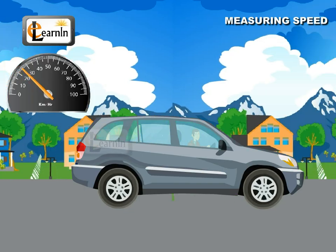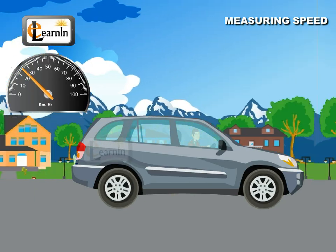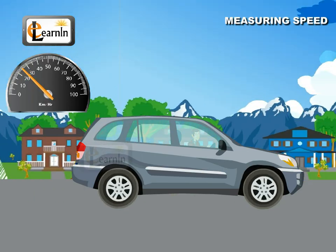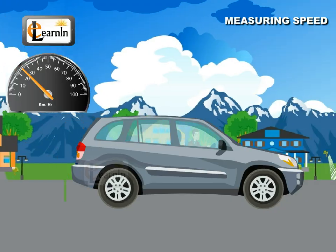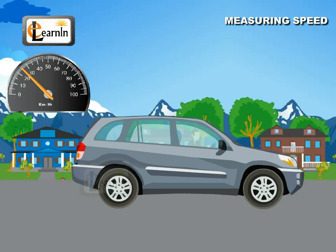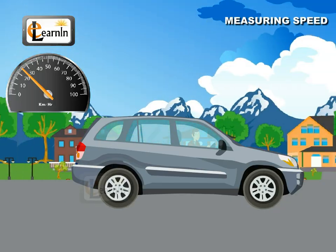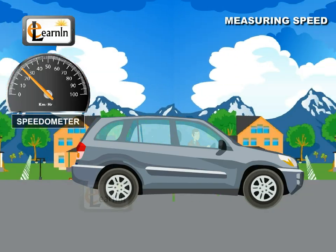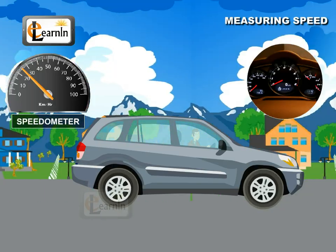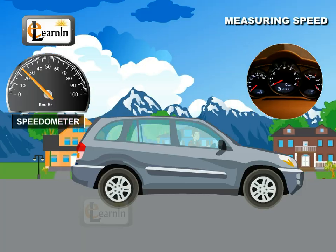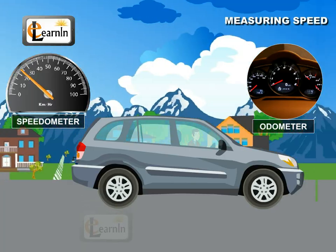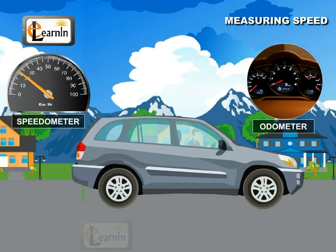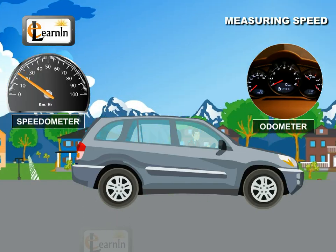One must have observed a meter fixed on vehicles to measure the speed. Such a device is known as a speedometer. There is also another device called the odometer, which measures the distance moved by the vehicle.